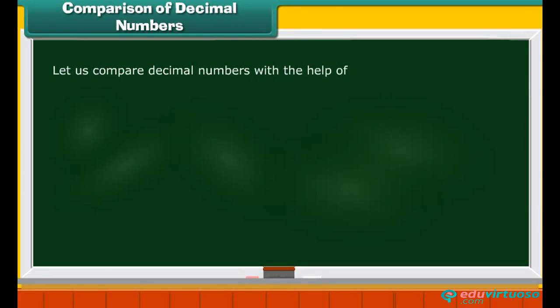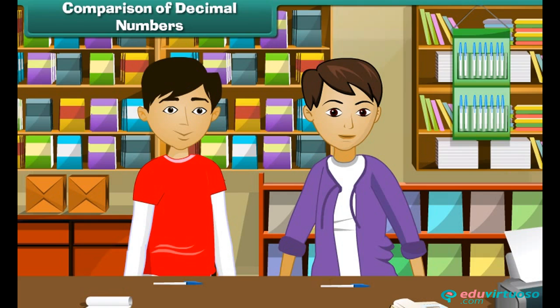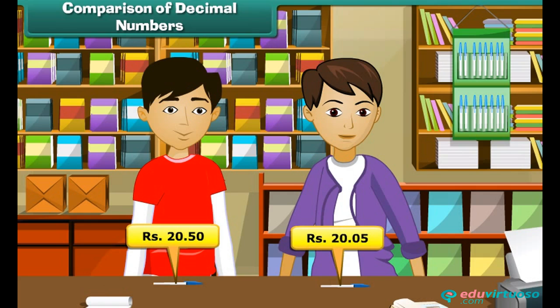To understand decimals better, we now compare decimal numbers with the help of expanded form, looking at ascending and descending order. Karan bought a pen for Rs. 20.50, while Ravi bought a pen for Rs. 20.05.